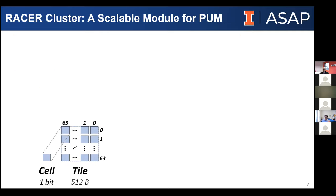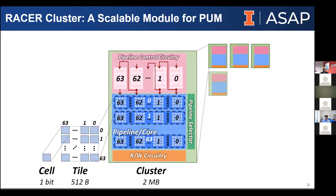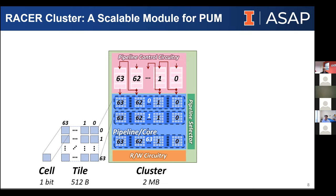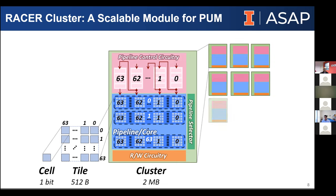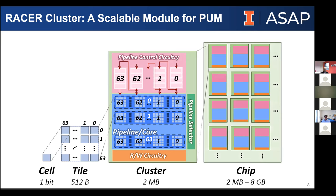This allows us to pipeline over multiple sets of words such that while working on bit one of one set of words, we can simultaneously work on bit zero of another set, exploiting not only parallelism but also data reuse opportunities. We've built this into a fairly scalable architecture: small 64x64 tiles assembled into a cluster, where 4,000 of those tiles share a single set of peripheral circuits and control circuits.